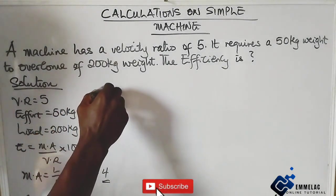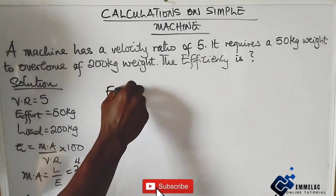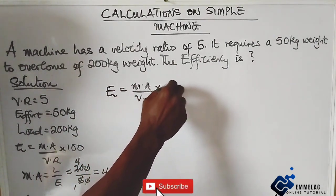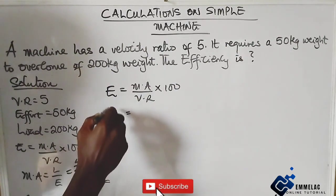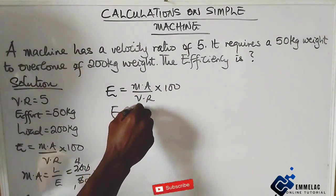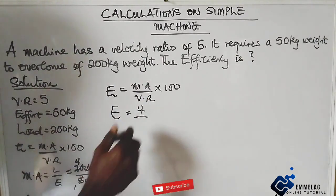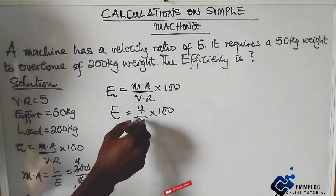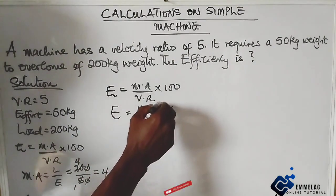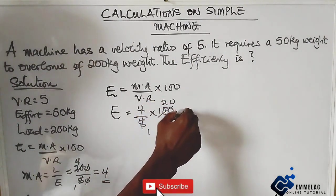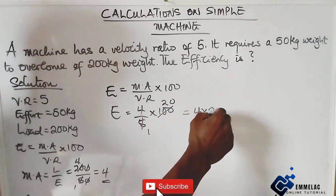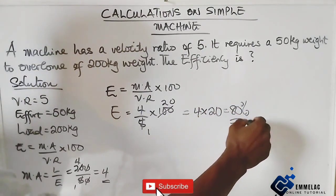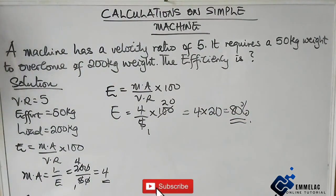Now we will input this 4. The efficiency equals mechanical advantage over velocity ratio times 100. My mechanical advantage is 4 over 5 times 100. That will be 4 times 20, which gives us 80% as the final solution.